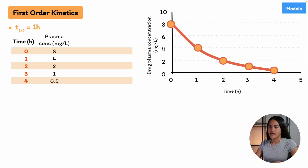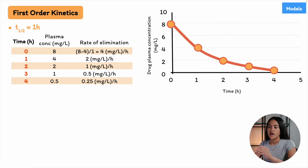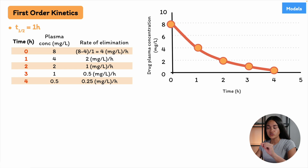The half-life remains constant, but what about the elimination rate? If we calculate the elimination rate — the difference in plasma concentration divided by the difference in time — it actually varies and declines over time. This is because the rate of elimination depends on the drug's plasma concentration. More drug leads to more enzyme recruitment, so the elimination rate is dependent on the drug's plasma concentration.